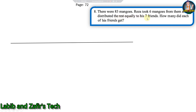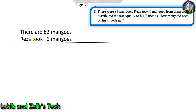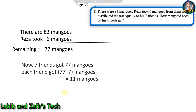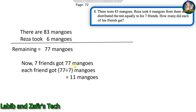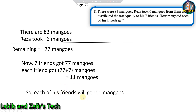Eighth question: there were 83 mangoes. Brazier took six mangoes from them and distributed the rest equally to his seven friends. How many did each friend get? First, 83 minus 6 equals 77 remaining mangoes. Then seven friends got 77 mangoes, so each friend got 77 divided by 7 equals 11 mangoes. Each of his friends will get 11 mangoes.